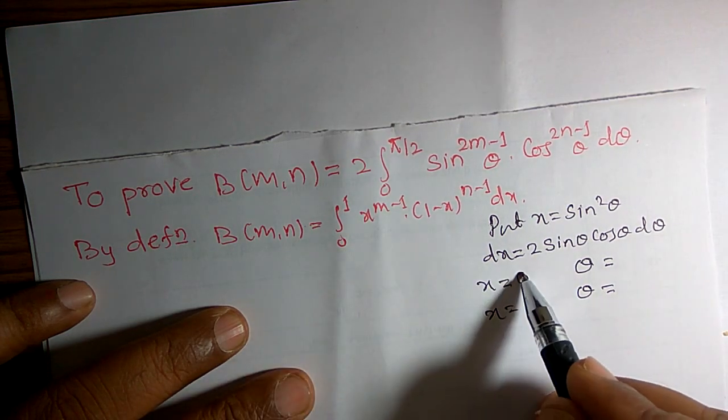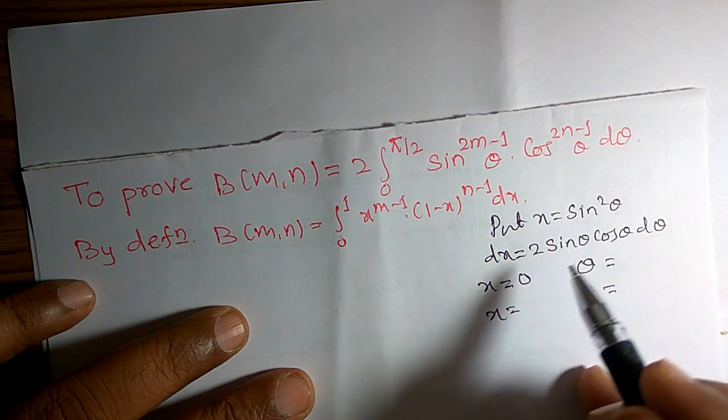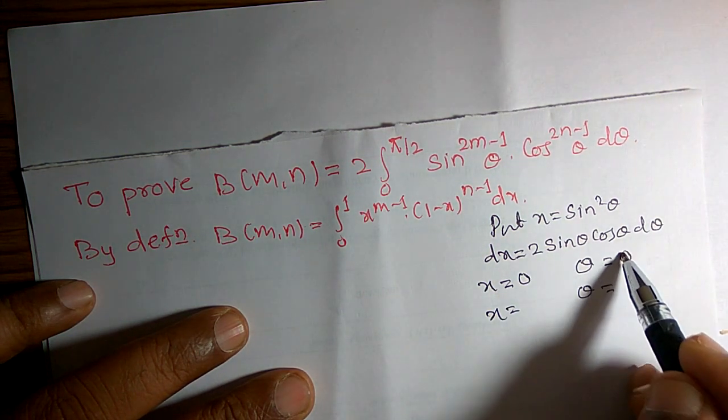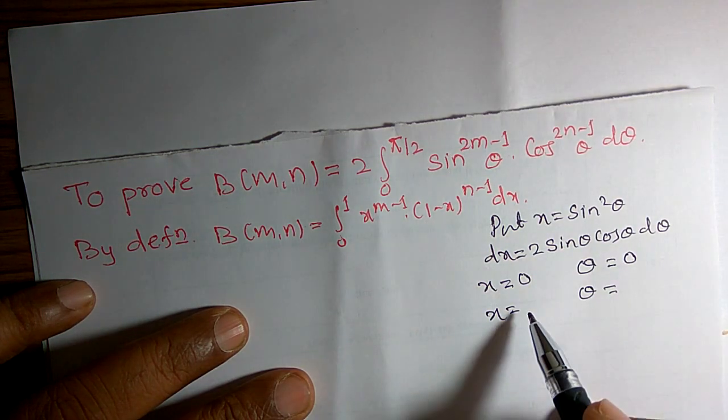When x is equal to 0, for what value of theta will I get 0? When I replace theta by 0, sin 0 is 0.